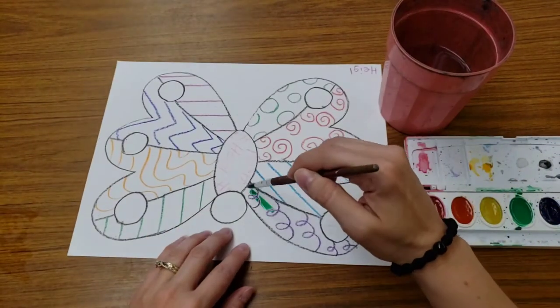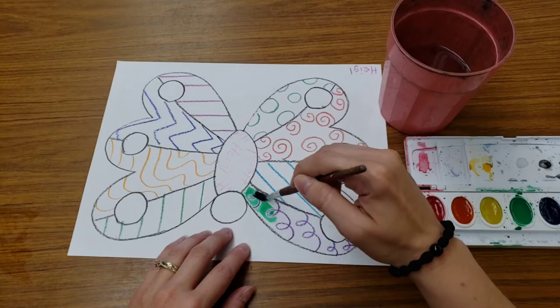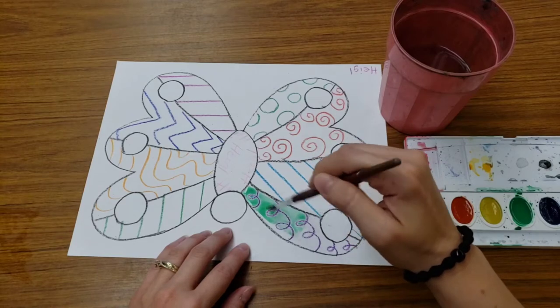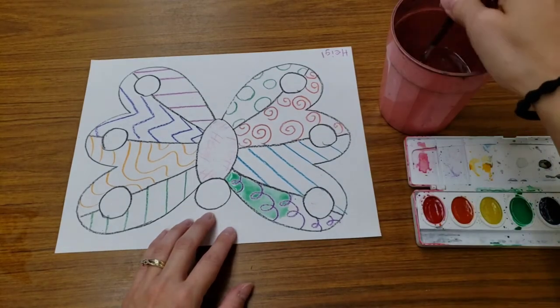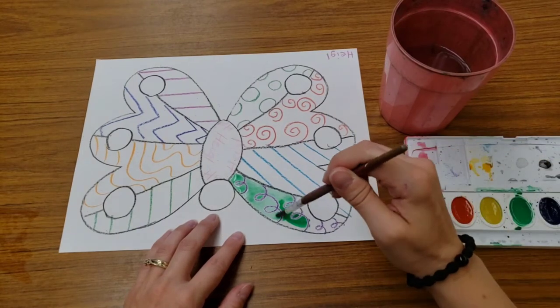So ways to paint this. One, you could just paint over your crayon lines. I'm staying inside the black lines though. More water, more paint, repeat.